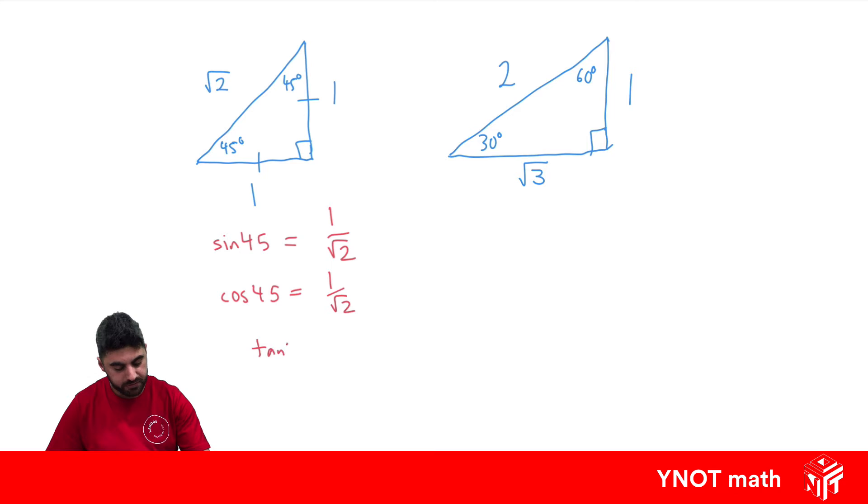Let's look at tan 45, where using this angle is the opposite over the adjacent. So it's 1 over 1, which is just 1. So there's our special results from that triangle.